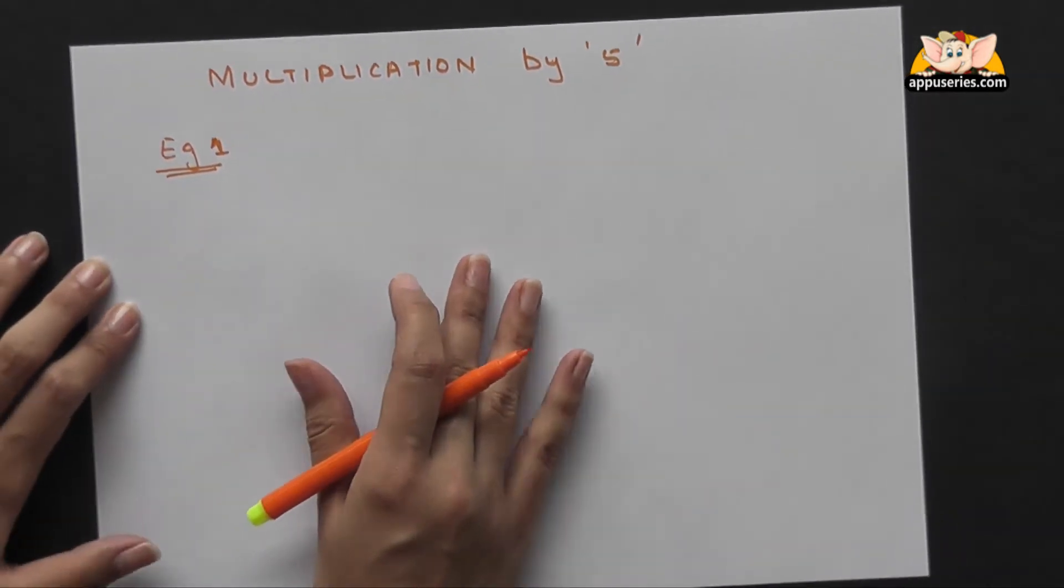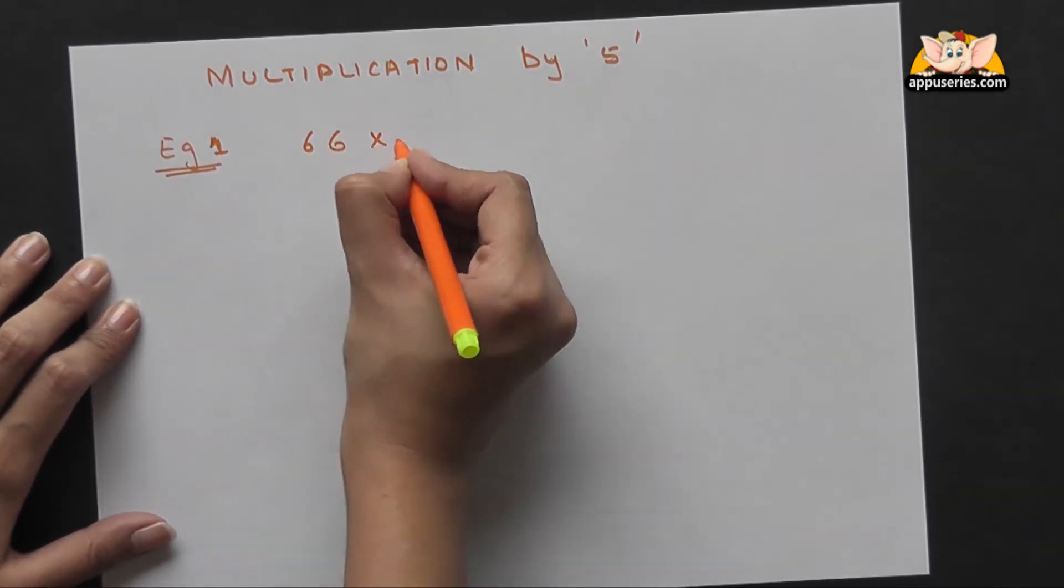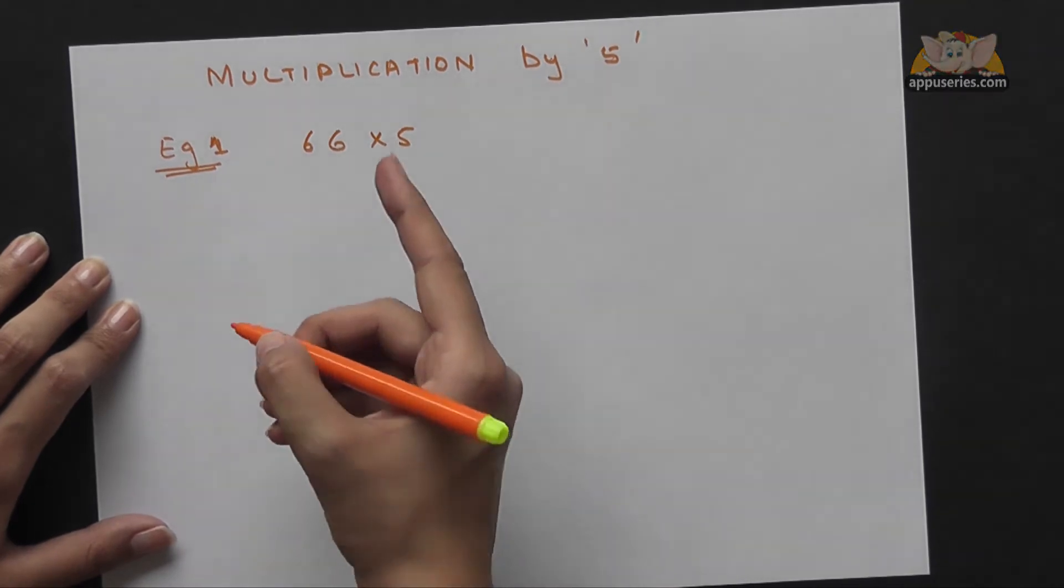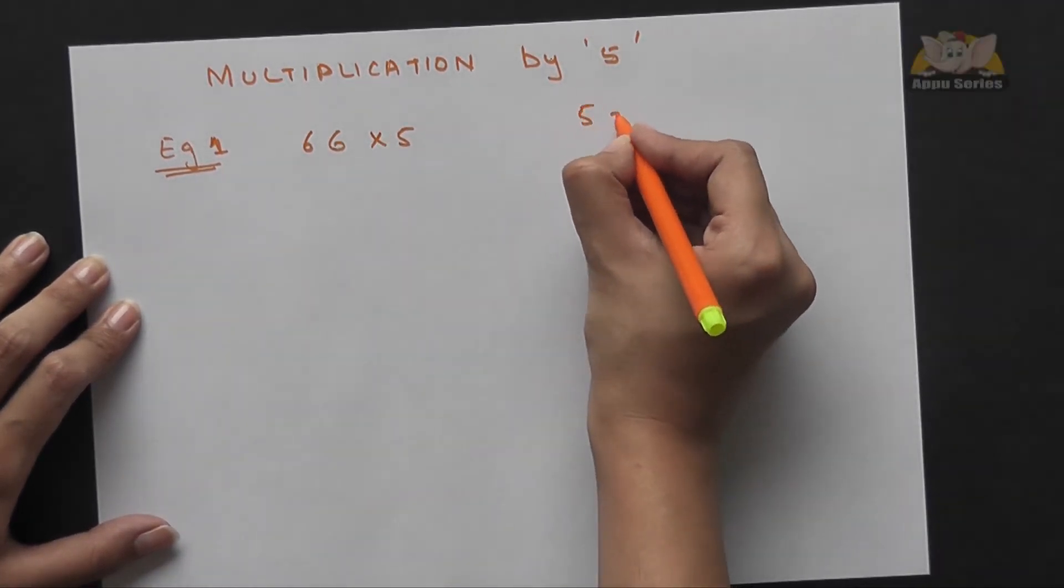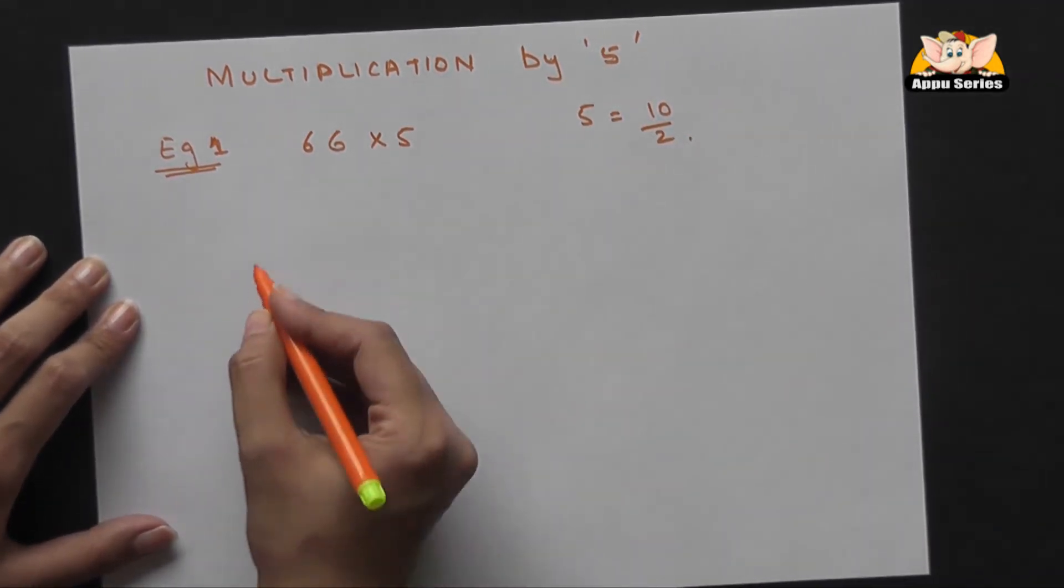We'll start with an easy example, say 66 into 5. Now here, we have to replace 5 as 10 divided by 2. 5 is nothing, 10 by 2, so multiplying by 10 makes it easy.